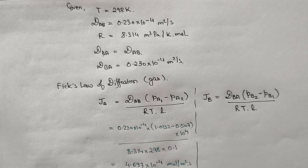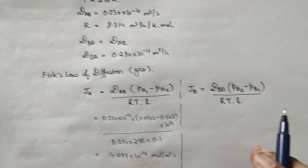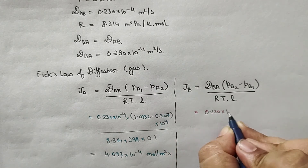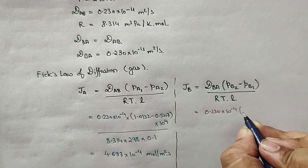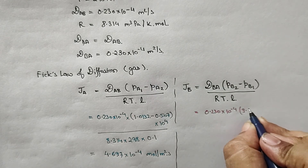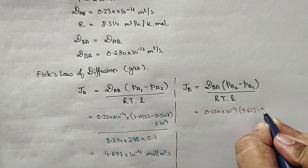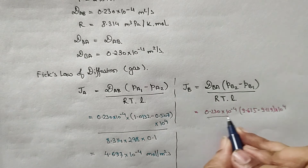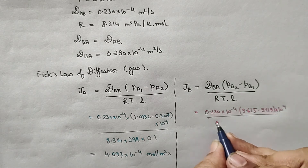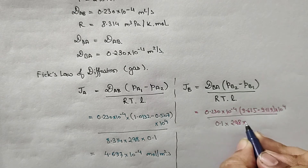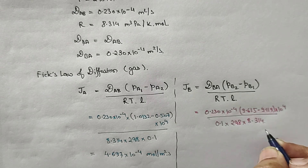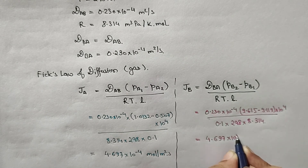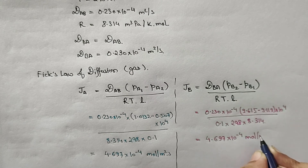Similarly, calculating J_B: (0.230 × 10⁻⁴) × (9.625 − 9.119) × 10⁴ divided by (0.1 × 298 × 8.314). This also comes out to J_B = 4.697 × 10⁻⁴ mol/(m²·s).